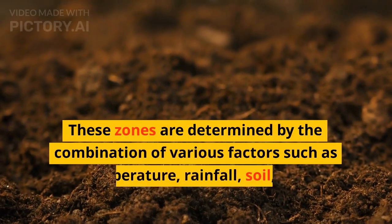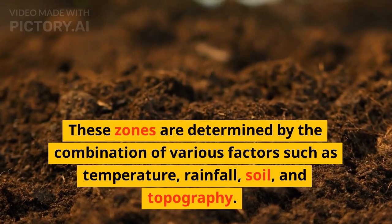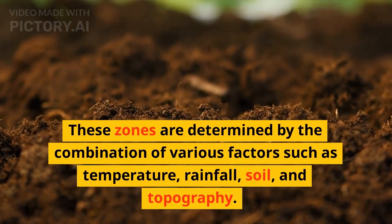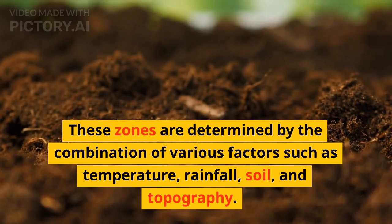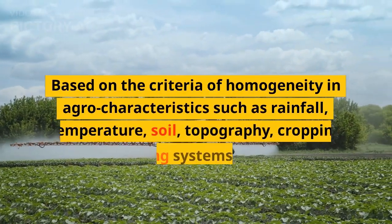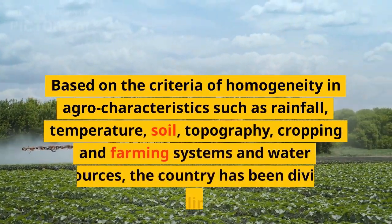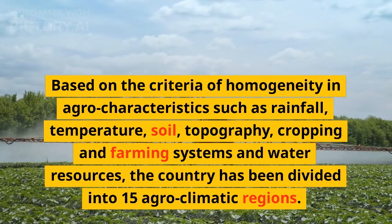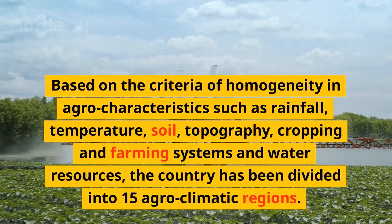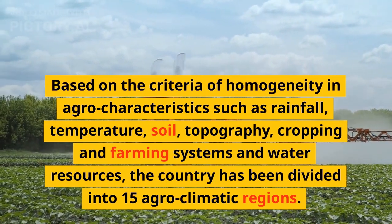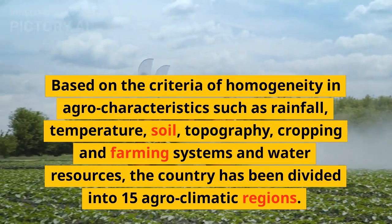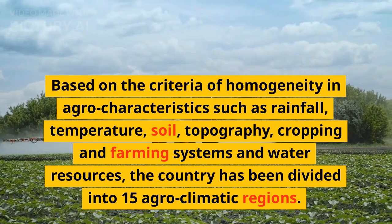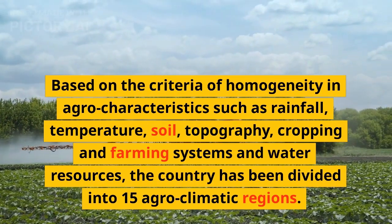These zones are determined by the combination of various factors such as temperature, rainfall, soil, and topography. Based on the criteria of homogeneity in agro-characteristics such as rainfall, temperature, soil, topography, cropping and farming systems, and water resources, the country has been divided into 15 agro-climatic regions.